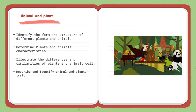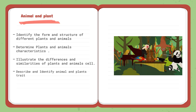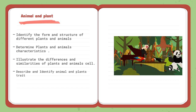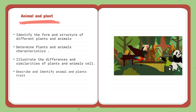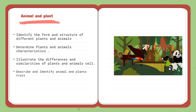For the fourth and final lesson, which is Animals and Plants, we're going to identify the form and structure of different plants and animals. Since plants and animals are living things, we're going to talk about their characteristics as plants and animals separately. We're going to illustrate the differences and similarities of plant and animal cells, and then describe and identify animal and plant traits.